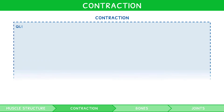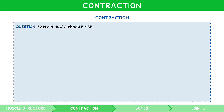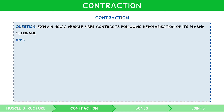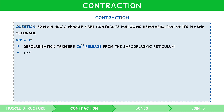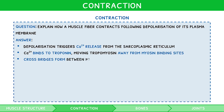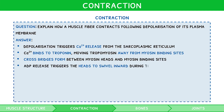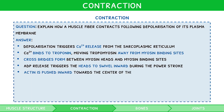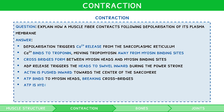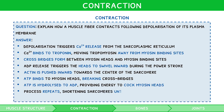Let's summarise this with an example question: Explain how a muscle fibre contracts following depolarisation of its plasma membrane. Depolarisation triggers calcium to be released from the sarcoplasmic reticulum. Calcium binds to troponin, moving tropomyosin away from myosin binding sites. Cross bridges form between myosin heads and myosin binding sites. ADP is released, triggering the heads to swivel inwards during the power stroke. Actin is pushed inwards toward the centre of the sarcomere. ATP binds to myosin heads, breaking cross bridges. ATP is hydrolysed to ADP, providing energy to cock myosin heads. The process repeats, shortening sarcomeres until calcium returns to the sarcoplasmic reticulum and tropomyosin blocks myosin binding sites.